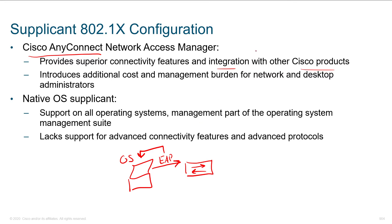AnyConnect is going to give you support for all the different EAP options. The native OS supplicant can typically only do a subset of what AnyConnect can do. The AnyConnect client can hook deeper into the OS and look at the security posture, giving details to the ASA or Firepower device about what's actually happening on the endpoint — better visibility, which gives us the ability to make better decisions.